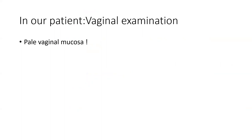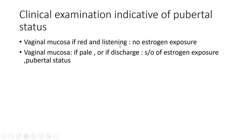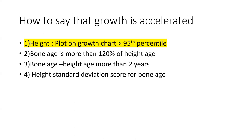On vaginal examination, the patient had pale and pink vaginal mucosa — a sign of estrogen exposure. A red and glistening vaginal mucosa indicates no estrogen exposure and is prepubertal. Pale or pink mucosa, or history of vaginal discharge as in our patient, is suggestive of estrogen exposure and pubertal status, or alternatively remote estrogen exposure such as from estrogen creams.